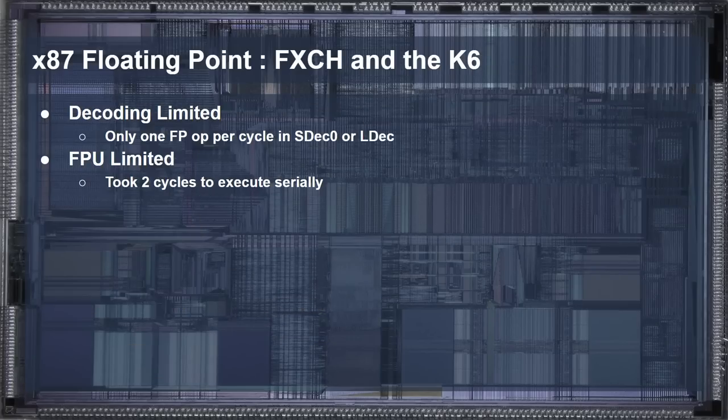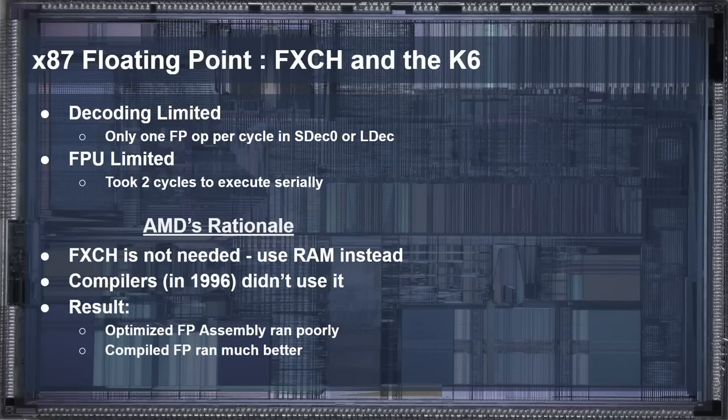AMD did not fare quite as well. Not only was the K6 decode limited, but it was also floating-point execution limited. The K6 had two short decoders which would be needed to achieve the same throughput as the Pentium. However, only the first short decoder could decode floating-point instructions, or they would have to be decoded by the long or vector decoder at a rate of one per cycle. This means that the floating-point and f-exchange pairing would take two cycles to decode.